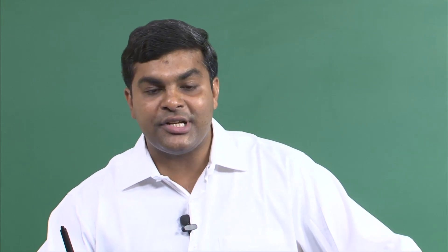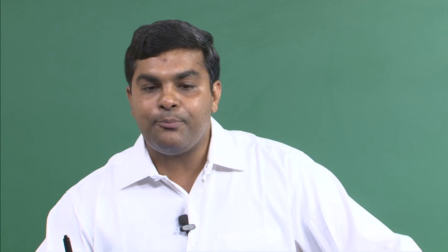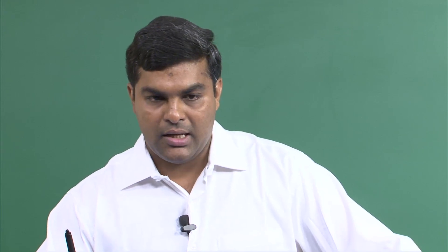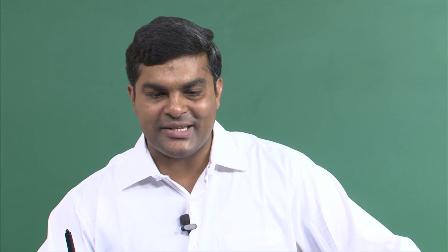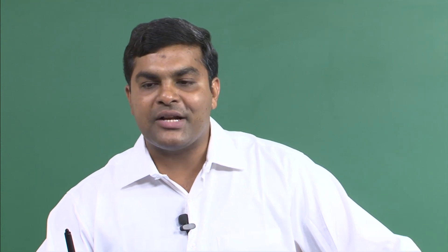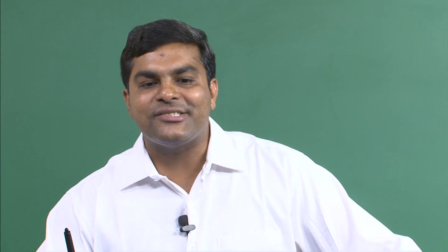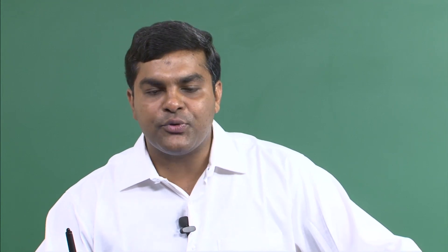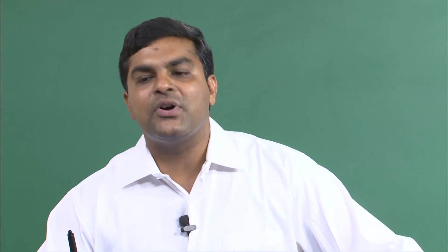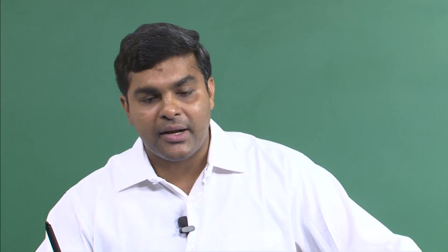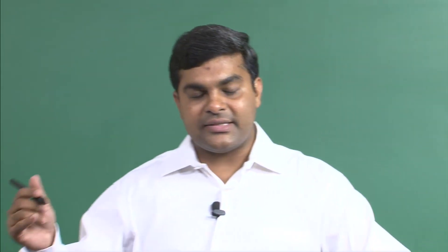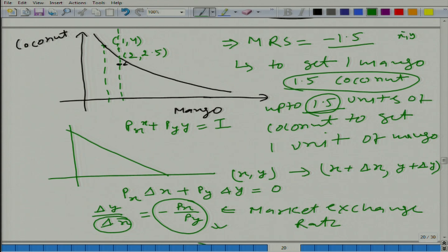So what we are talking about is the condition for optimality: you will reach the maximum possible utility given your budget constraint where your marginal rate of substitution is equal to the market exchange rate — in other words, where the slope of your indifference curve is equal to the slope of the budget line. And remember, the scenario we are assuming is that x and y at the optimal level are greater than 0.